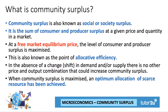We're going to focus on the diagrams in a second, but if you think about the equilibrium price in a free market — a market free of government intervention and also free of market failure — when we reach the equilibrium, the level of consumer and producer surplus is maximised. This is also known as the point of allocative efficiency. In the absence of any change, a shift in perhaps the demand or supply curve, there will be no other price and quantity combination that could increase community or social surplus. So when community surplus is maximised, an optimum allocation of scarce resources has been achieved.